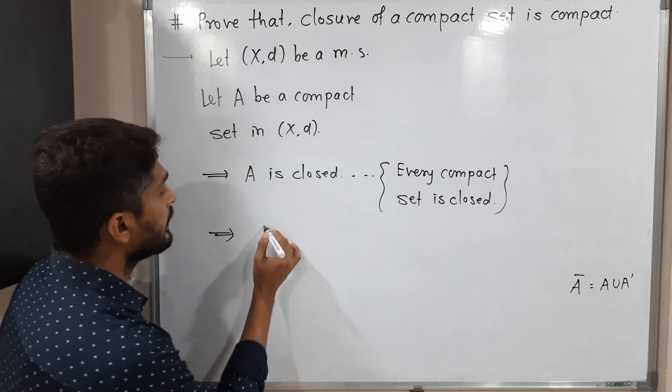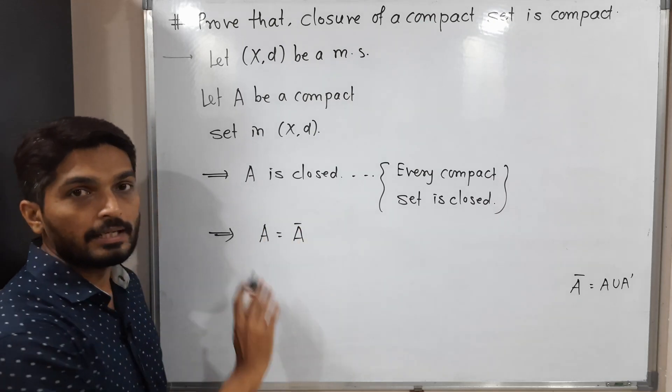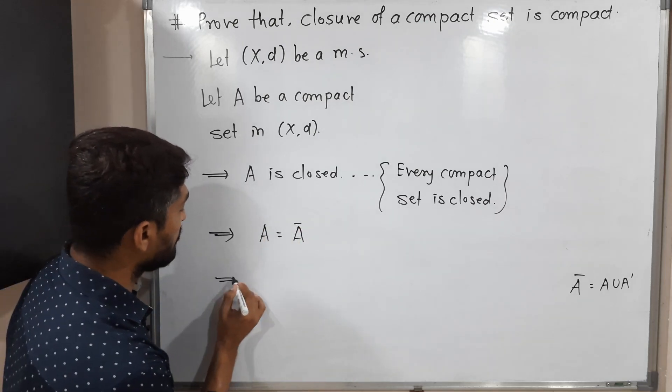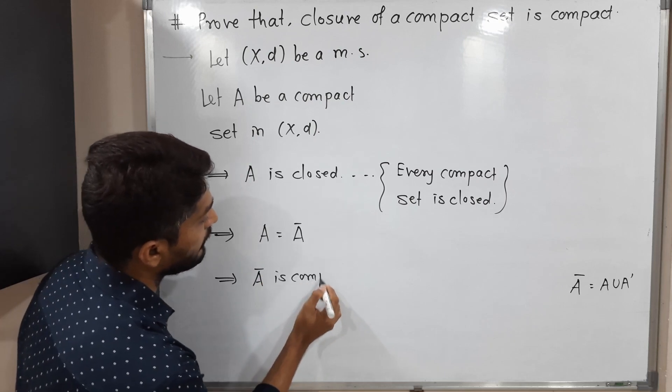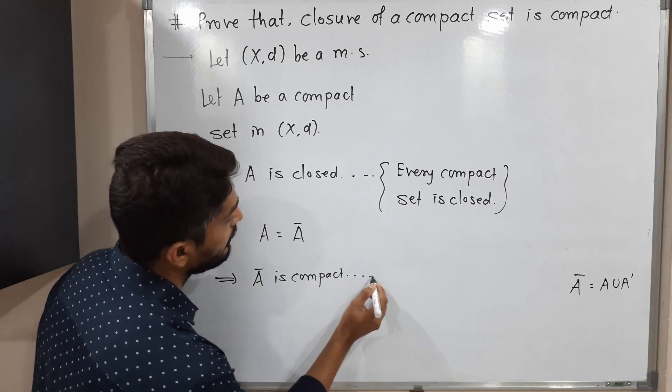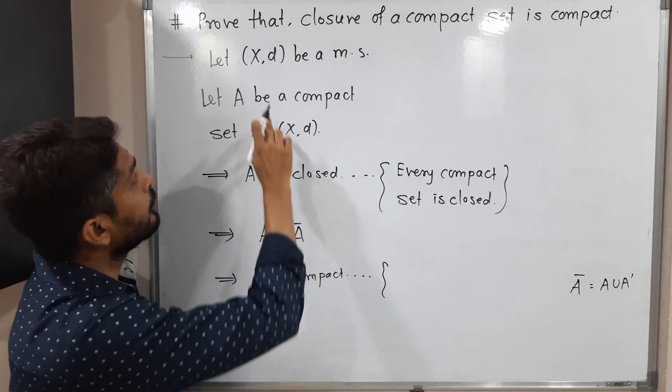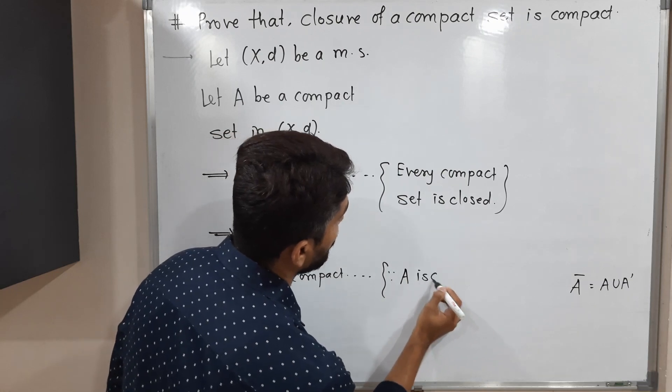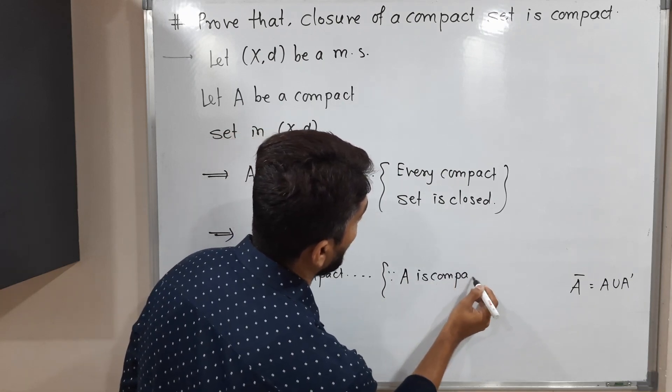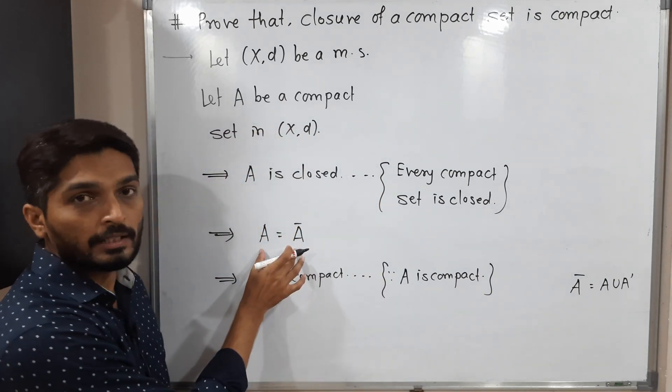Set is closed means A equals A bar. So we can directly write A bar is compact. Tell me why? How could we write it? A bar is compact since A equals A bar and already we have A is compact. Because A is compact and we have both of them are equal, clearly A bar is also compact.